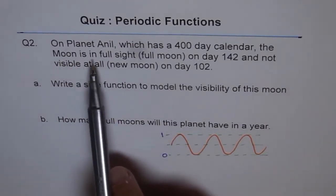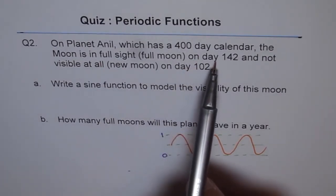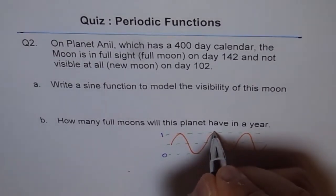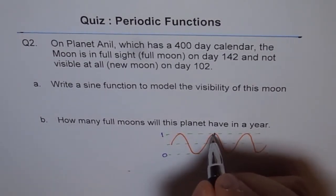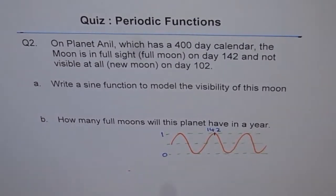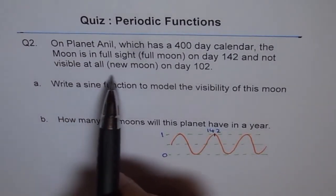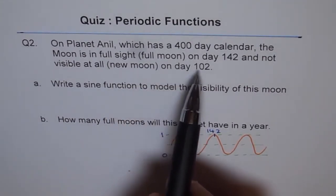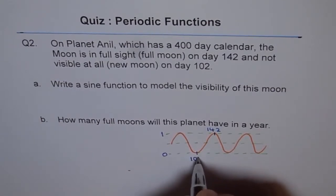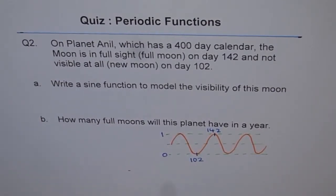Now let's read it once again and see what we are given. We say full moon is on day 142. So full moon is on day 142, so let's say this is a full moon. And this is on day 142. And it is not visible, that means new moon is on day 102. So let's say this is my 102 when moon is not visible.